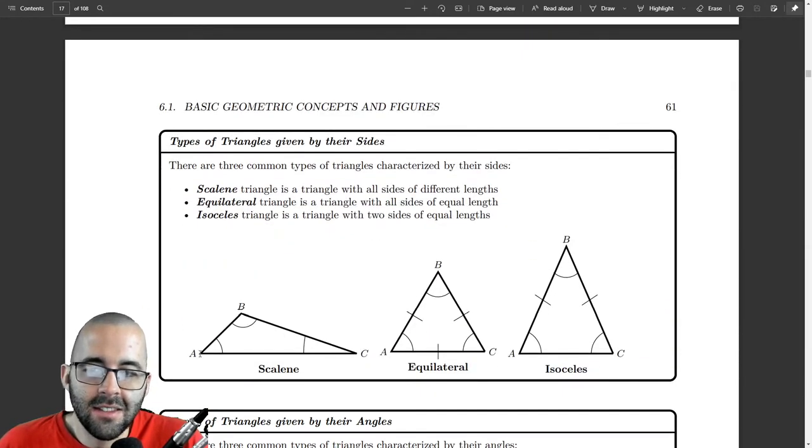So the vertices are A, B, and C. And the edges are sometimes called like BC is this edge. Sometimes this edge is also called little a, because it's opposite big A. Just some conventions.